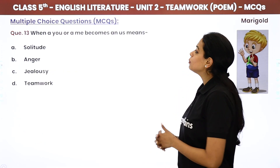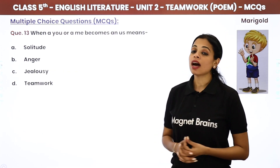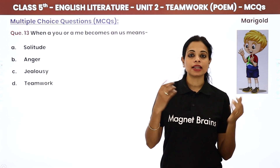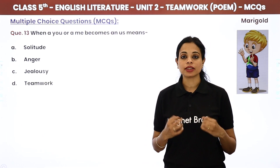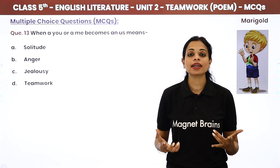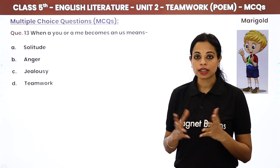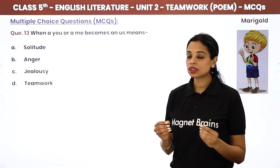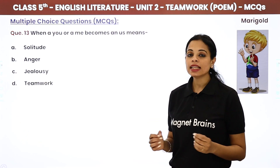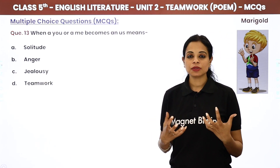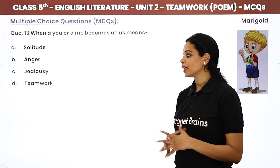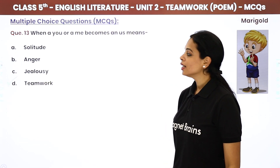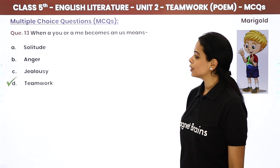When a 'you' or a 'me' becomes an 'us' — agar aap aur main milke 'hum' ho jaate hain, toh isko kya kehte hain? Options are solitude, anger, jealousy, or teamwork. The answer is teamwork.